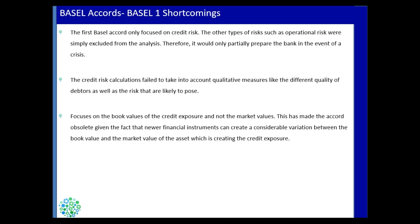The qualitative measures of different types of debtors were not taken into account in Basel 1. Some debtors can be differentiated from others based on their credit scores or other factors, but these kinds of differences were not considered.